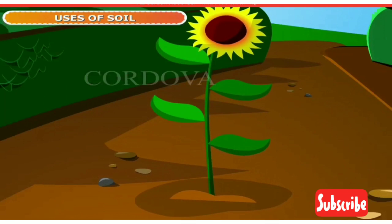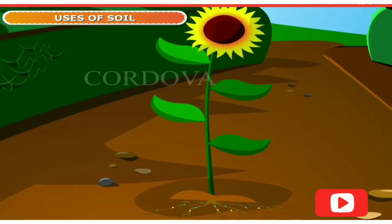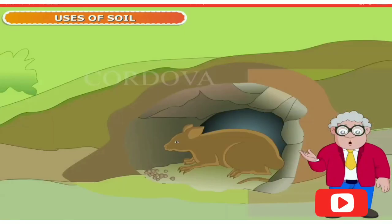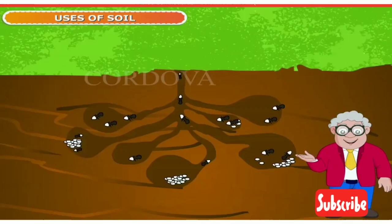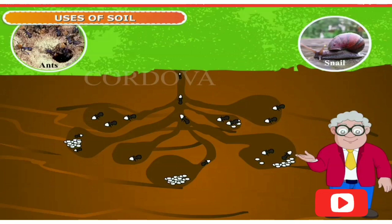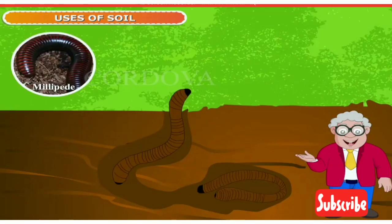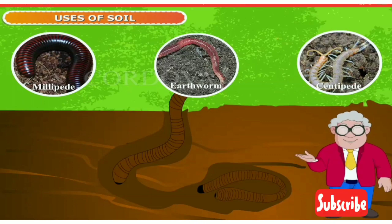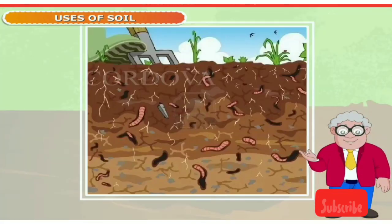Uses of soil. Soil is useful in many ways. All plants grow in soil. Soil contains water and minerals that plants need for their growth. If there was no soil, there would be no plants and we would have no food. Soil is home to many animals. Ants, snails, earthworms and many other animals live in soil. Earthworms are very useful for farmers. Earthworms dig tunnels in the soil and loosen it. This allows air to enter the soil, which is good for growing plants. So they are often called the farmer's friend.